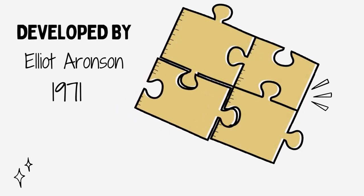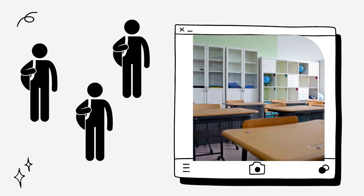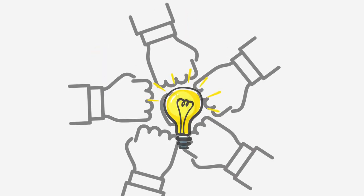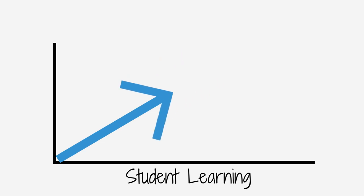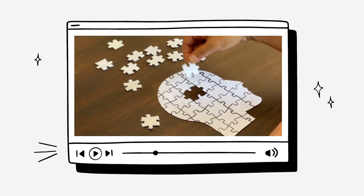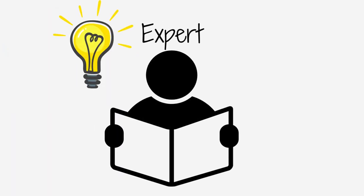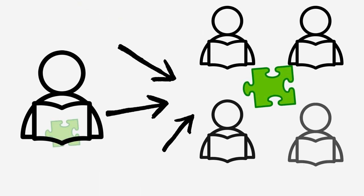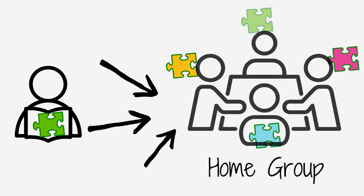Jigsaw is a strategy first developed by Elliot Aronson in 1971 and further advanced into assessment practices by Robert Slavin in 1986. It began as a method to assist students who had recently been desegregated and were learning to overcome hostilities and work together. Just as a jigsaw puzzle is a collection of various pieces coming together to make a complete picture, the jigsaw method of teaching tasks each student with becoming an expert with part of the learning puzzle. After a student studies that piece and meets with an expert group of peers, he or she brings it back to a home group to share, thus completing the puzzle.